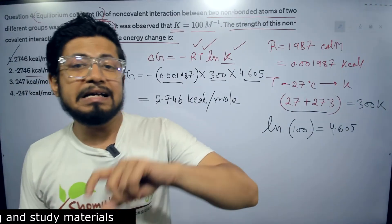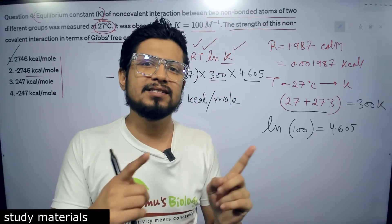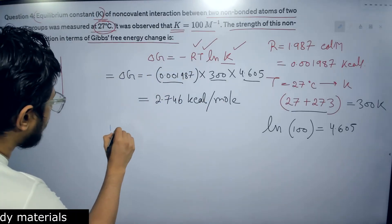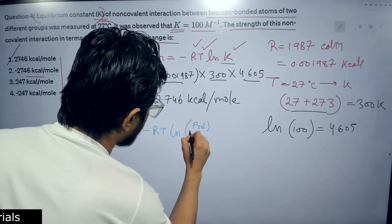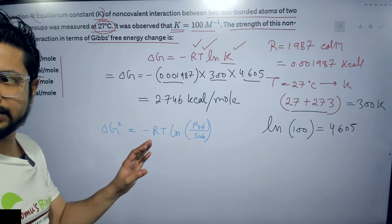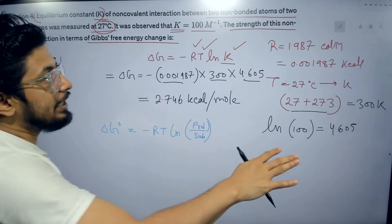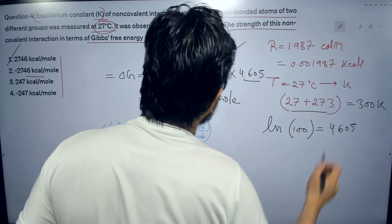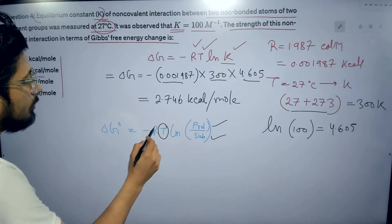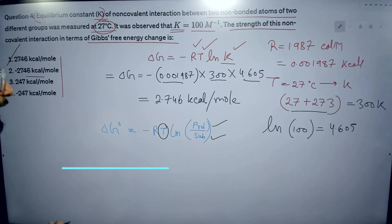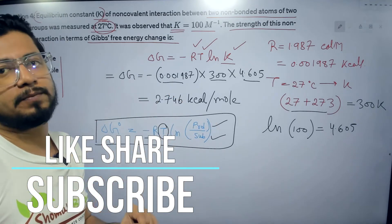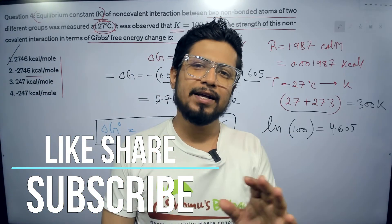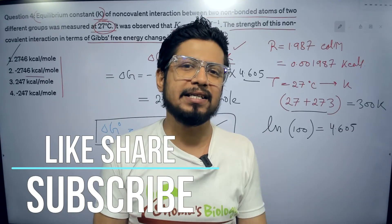Remember: Gibbs free energy problems in CSIR NET — most of them ask from ΔG = -RTlnK. There is also another formula: ΔG = -RT ln([product]/[substrate]), i.e., product concentration divided by substrate concentration. With these three formulas — coupled reaction ΔG, ΔG = -RTlnK, and ΔG = -RT ln(product/substrate) — you will be able to answer all kinds of Gibbs free energy problems in CSIR NET, GATE, ICMR, IIT JAM, and DBT exams.